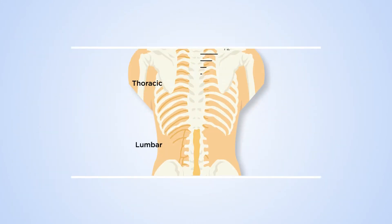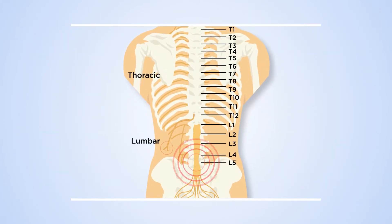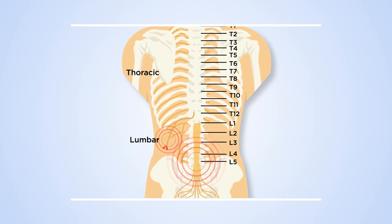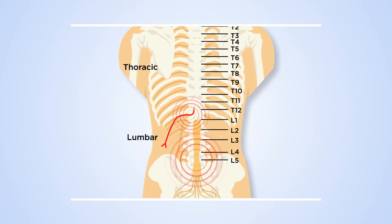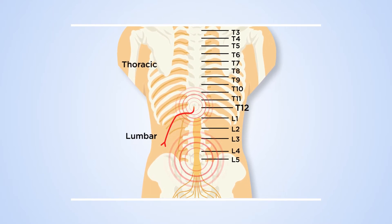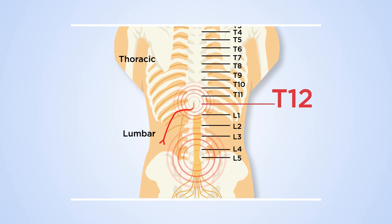The first step was identifying that, contrary to the common dermatomal maps, the branches of the T12 spinal nerve innervate the skin and soft tissue of the lower back.